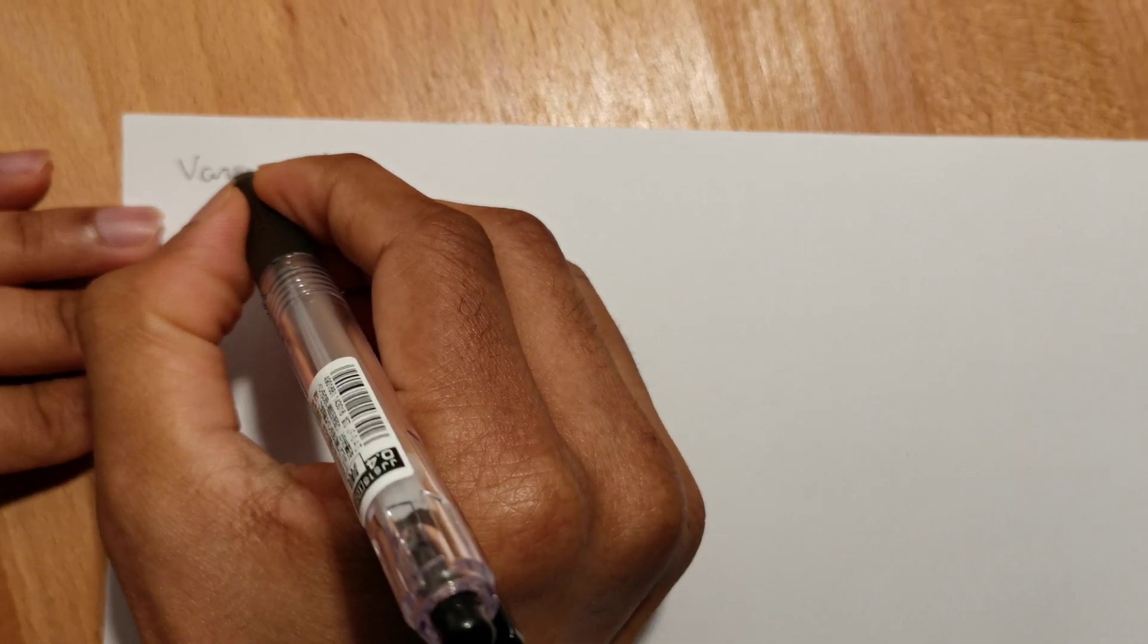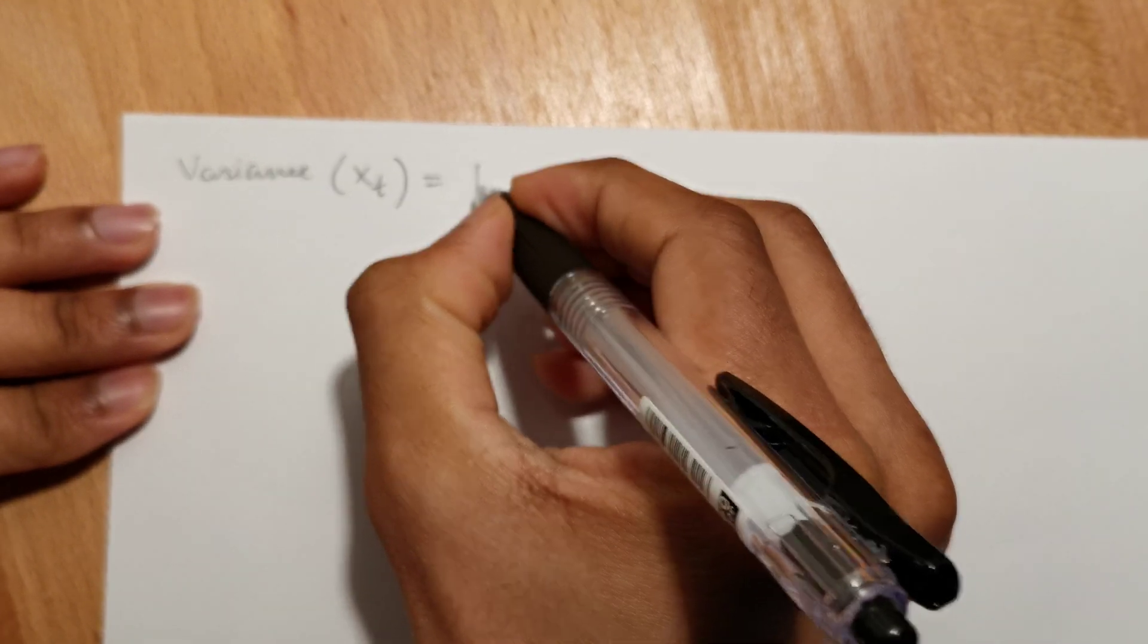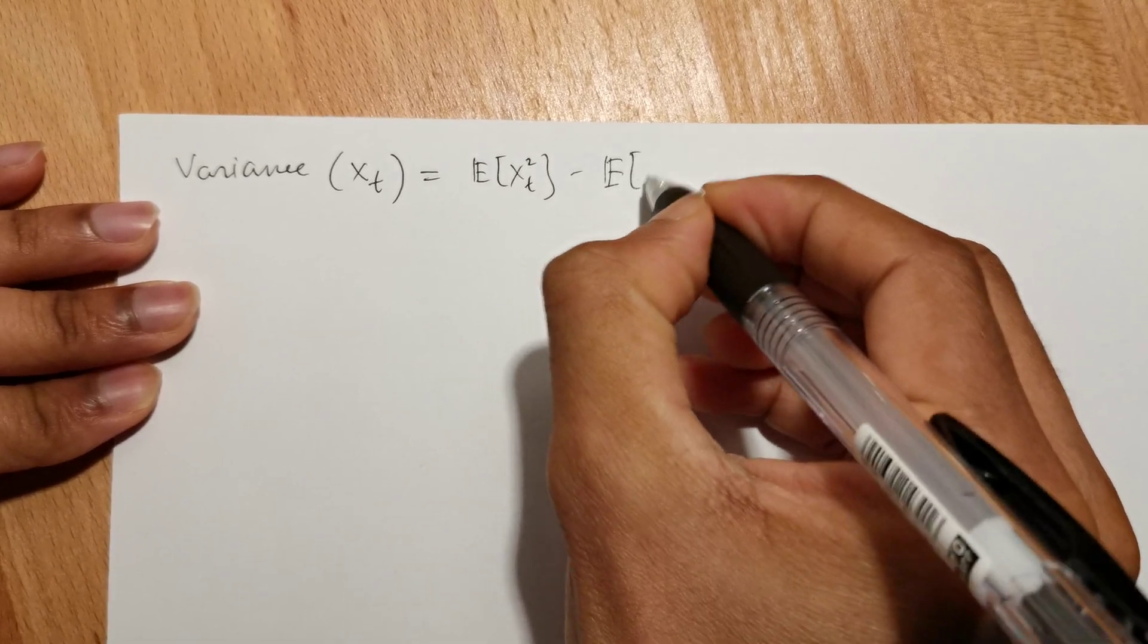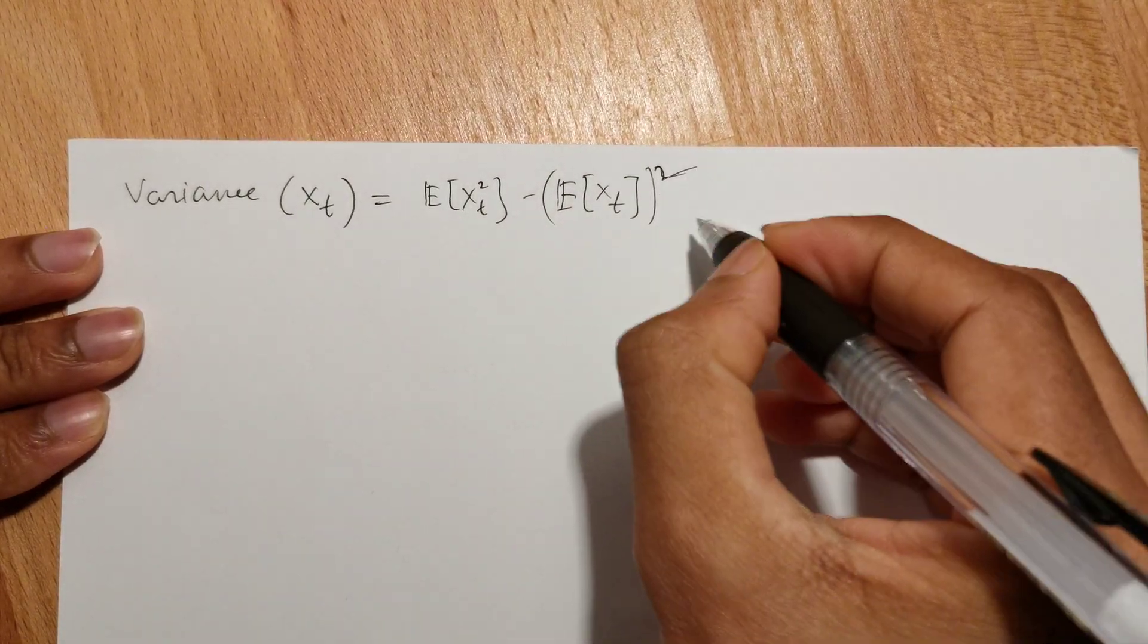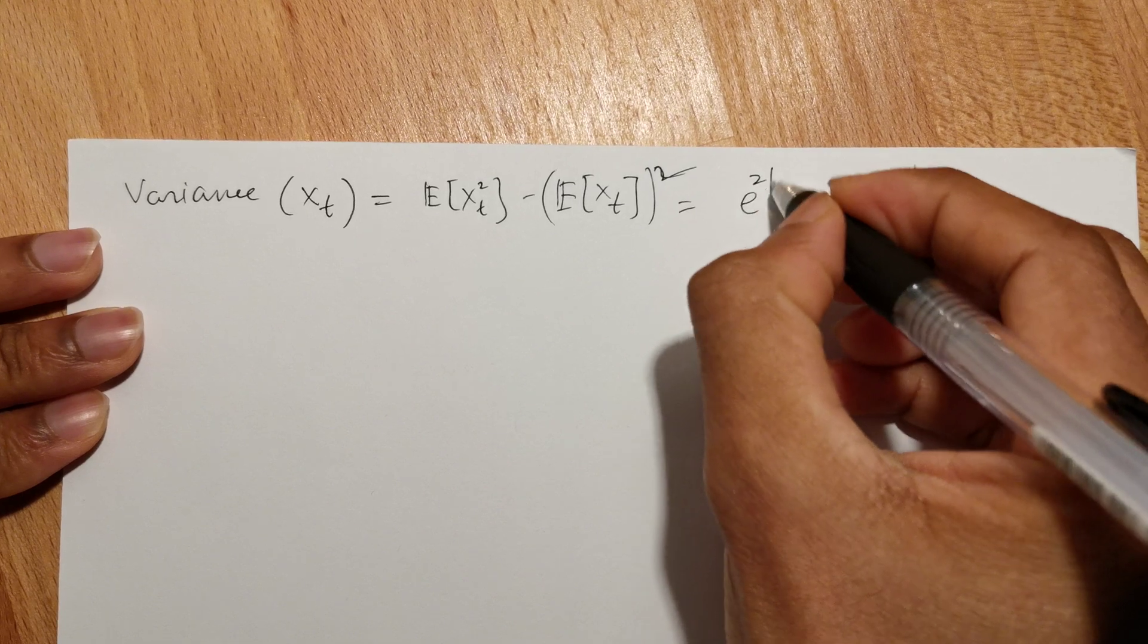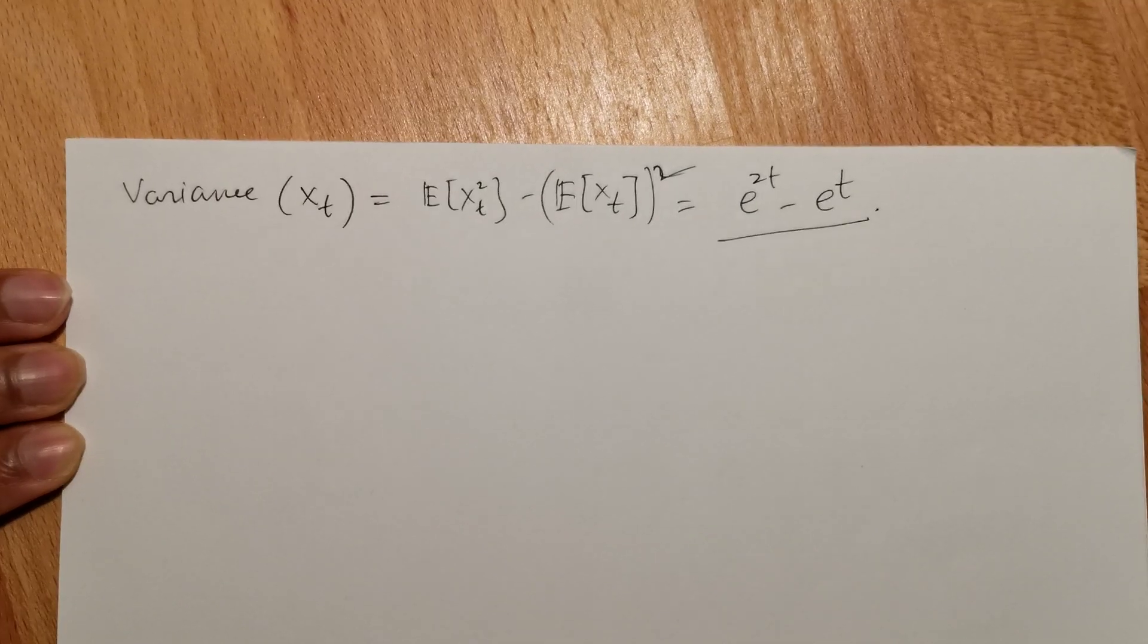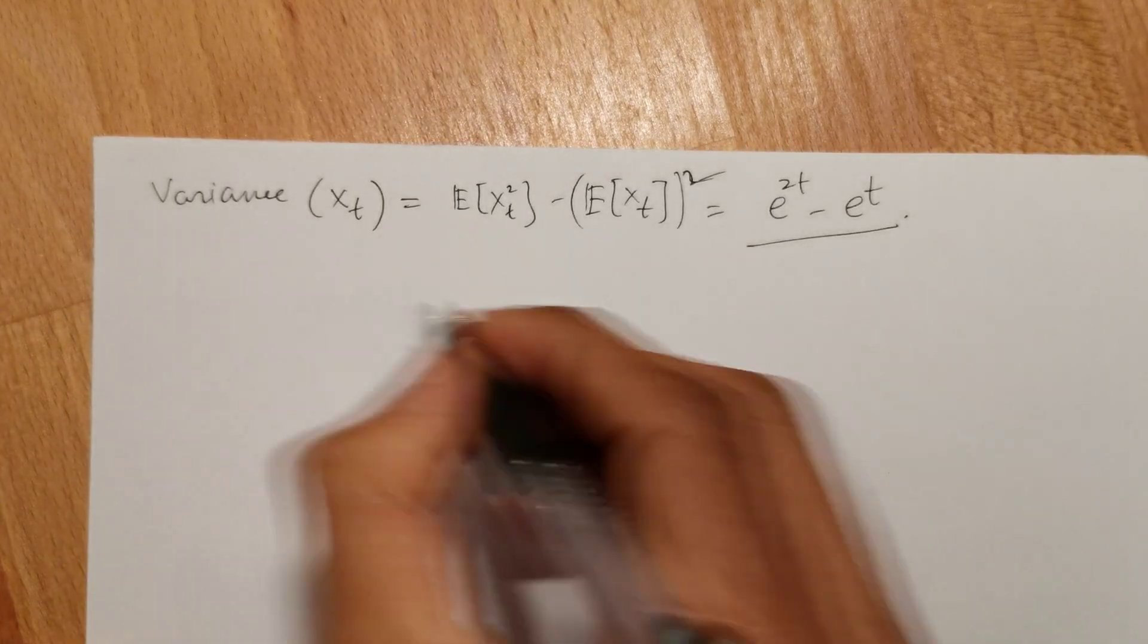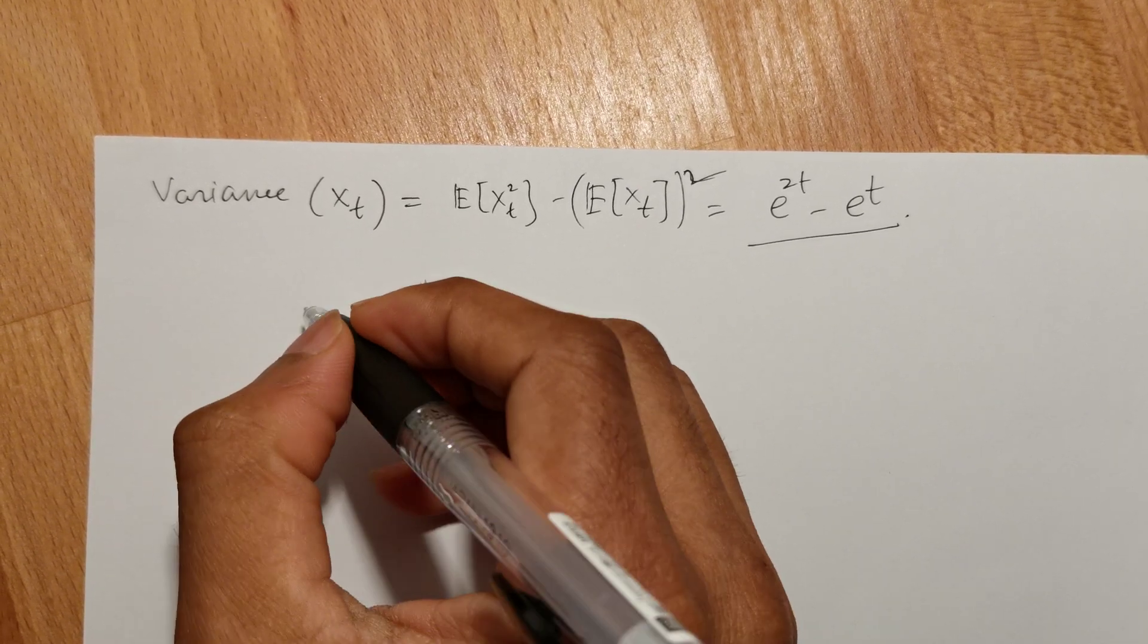So variance of the geometric Brownian motion equals E[Xt^2] - (E[Xt])^2, which is e^(2t) - e^t.